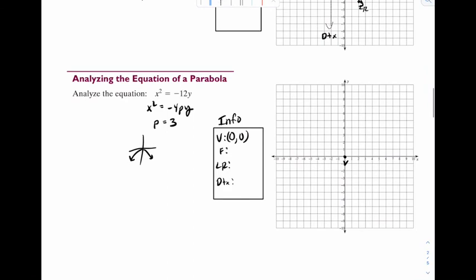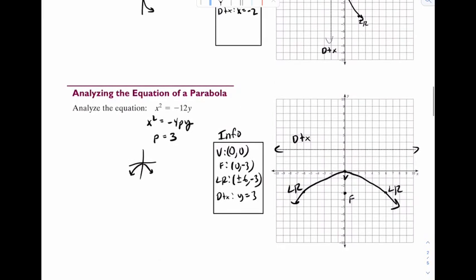And if p is 3, opening down, I'm going to go down 3. 1, 2, 3. There's my focus. And that would mean my directrix is right here. That would be y equals 3. And our LR points, if this is 3, we're going to go out 6. And that would be plus or minus 6 comma negative 3. And we're done.